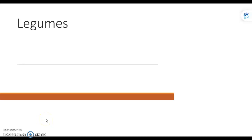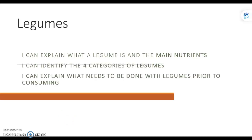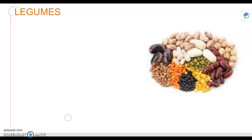Alright students, this is going to be a review as we started legumes before our doors were closed at school. So just as a review, the learning targets were identifying the main nutrients in legumes, four categories of legumes, and explaining what needs to be done with dried legumes prior to consuming.